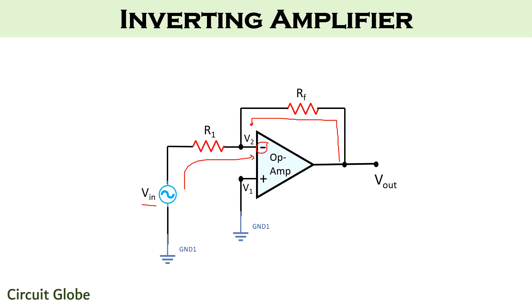The term feedback is used to represent that some part of the output is given back to the input for further operations. This RF plays a crucial role because this is the feedback resistance through which the feedback signal is provided to the inverting terminal of the op-amp.